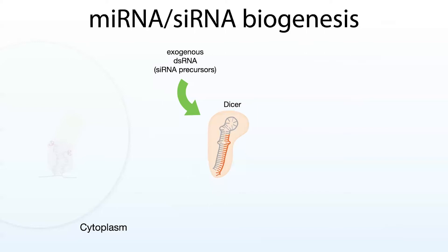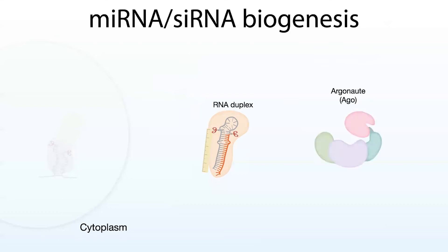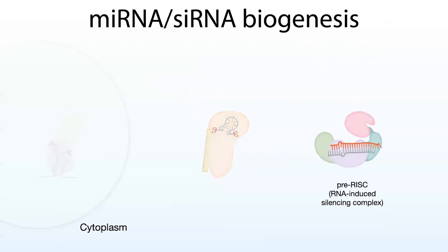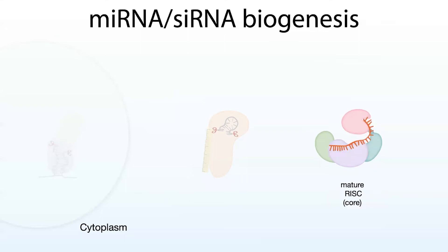Any of these precursors get loaded into the same protein, Dicer. Dicer acts as a kind of ruler and scissors in one — it's going to measure off a duplex of about 22 nucleotides and cleave it to create an RNA duplex with overhanging strands. This is going to get loaded into the Argonaute protein to form the pre-RISC. At this point, the seed sequence of the microRNA or the siRNA, as well as the rest of the sequence, is hidden by the second strand — what we call the passenger or star strand. In order to become a mature RISC complex, Ago has to eject that second strand, and now we have a mature core RISC complex that can go seek out and bind to messenger RNA targets.